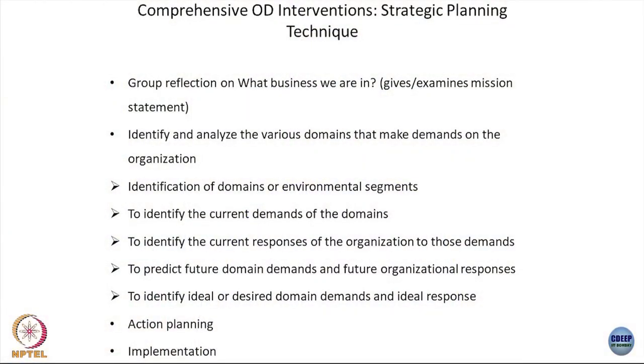How can a company decide where to venture into? The strategic planning technique at the organizational level is a forum where collective wisdom is harnessed and ideas are invited to look at what possibilities exist for the organization to respond to the changing demands of the environment — technical, political, global economic, and social. The steps also involve predicting future domain demands and identifying the ideal organizational response. Once the response is identified, it is supported by action planning, followed by the most important part: implementation. Implementation requires resources, follow-up, and most importantly the commitment of the people involved.